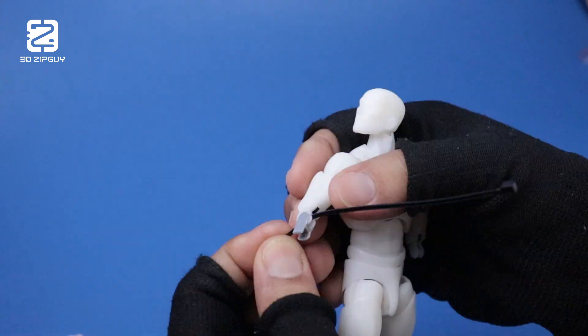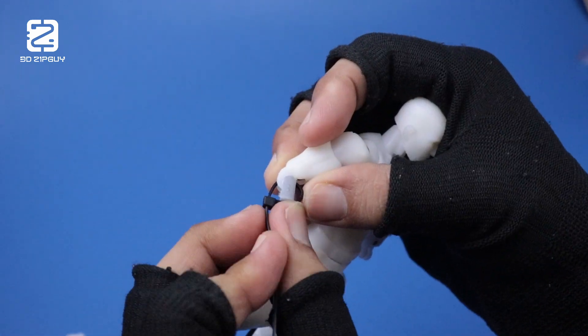I've printed these elbow pegs and the left shin in PLA+. They fit surprisingly well with the resin printed components.